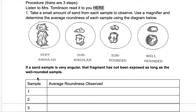Three steps to the sand lab procedure. Number one, this is the first thing you're going to do: you're going to take a small amount of sand from each sample to observe. Just stick your finger in it or take a small pinch and put it on the black lab table so you can look at it, or you can put your microscope right on the top layer of sand and look carefully.